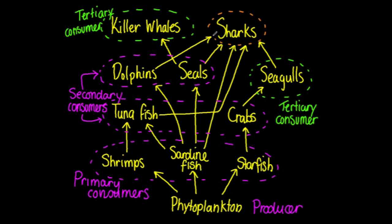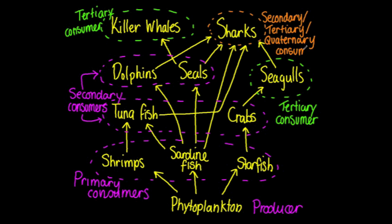Finally, when you look at the sharks and follow through my cursor or arrow, you can see that they are secondary consumers, but also tertiary consumers, and finally also quaternary consumers. So one organism can occupy more than one trophic level.